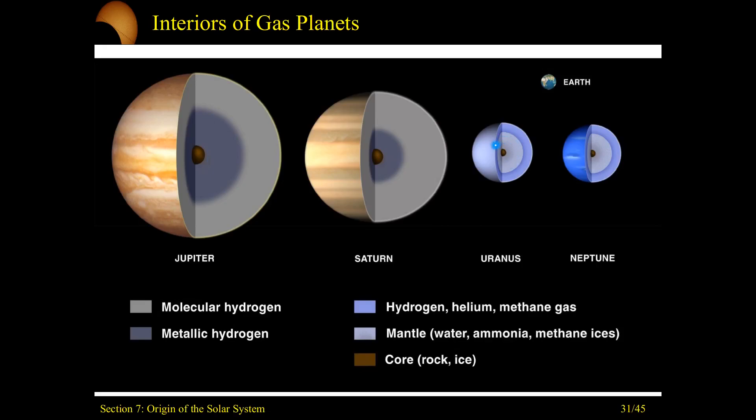Outside of this mantle in Uranus and Neptune, you'll have this hydrogen, helium, and methane gas in that atmosphere.